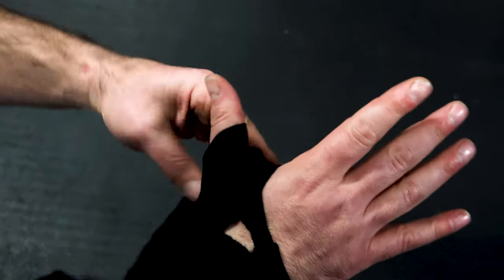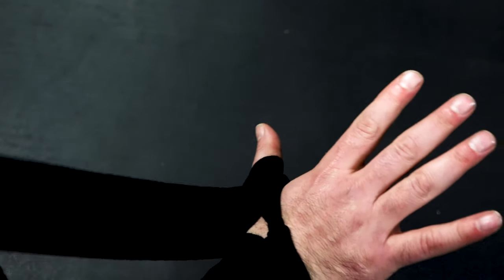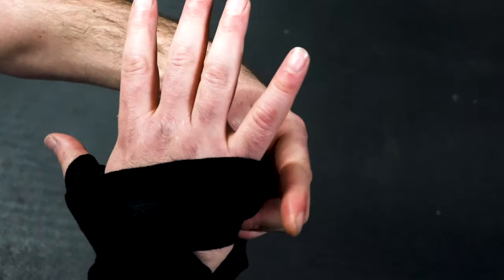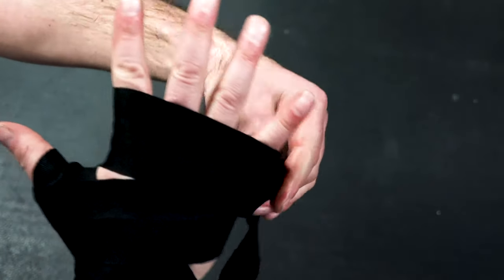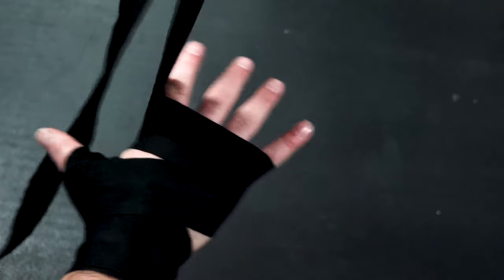We then hook the thumb, go around the thumb, over the hand to the side and then a couple of times underneath the fingers and over the knuckles, keeping the fingers nice and wide.